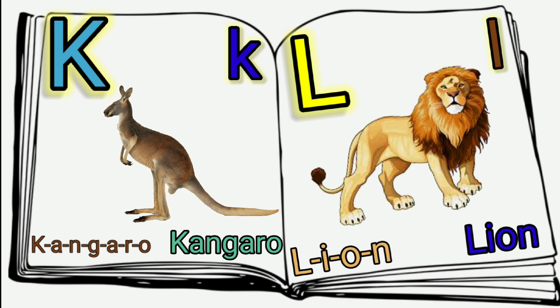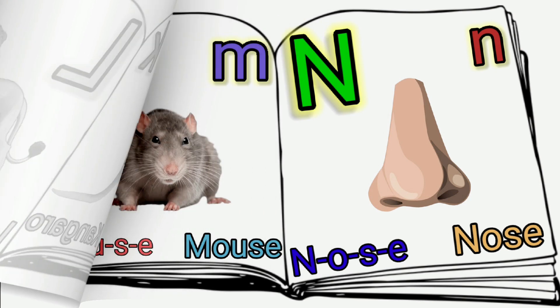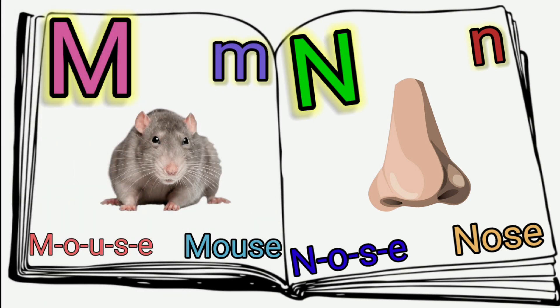L is Lion. M. M is Mouse — M, O, U, S, E — Mouse. M is Mouse. N. N is Nose — N, O, S, E — Nose. N is Nose.